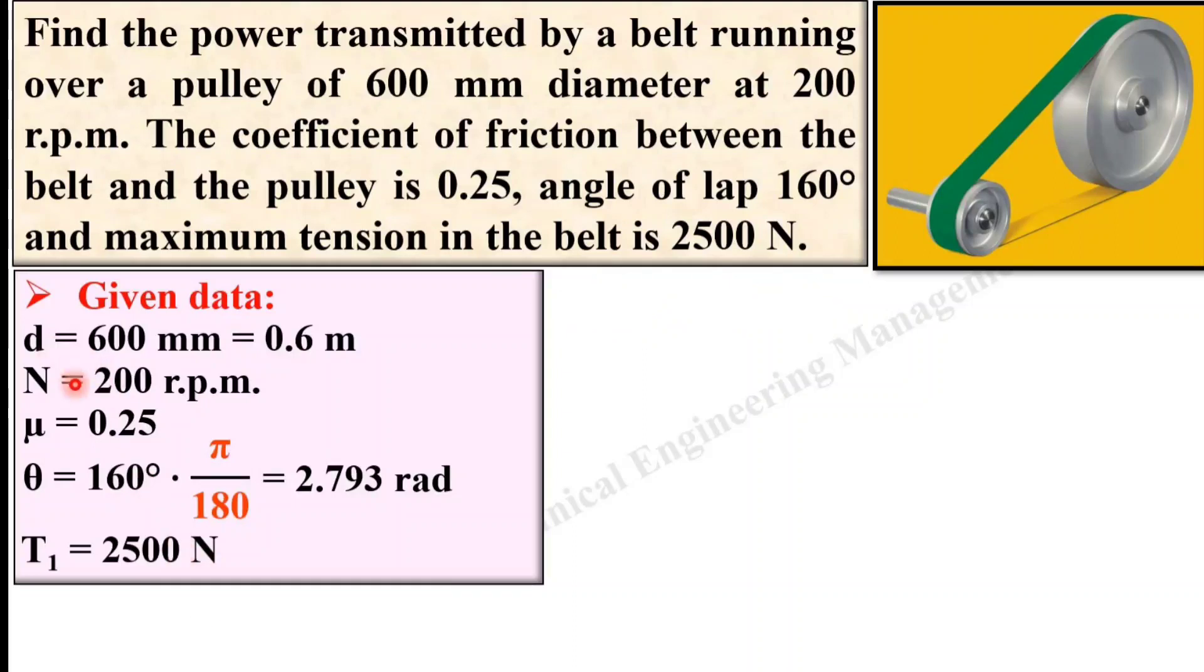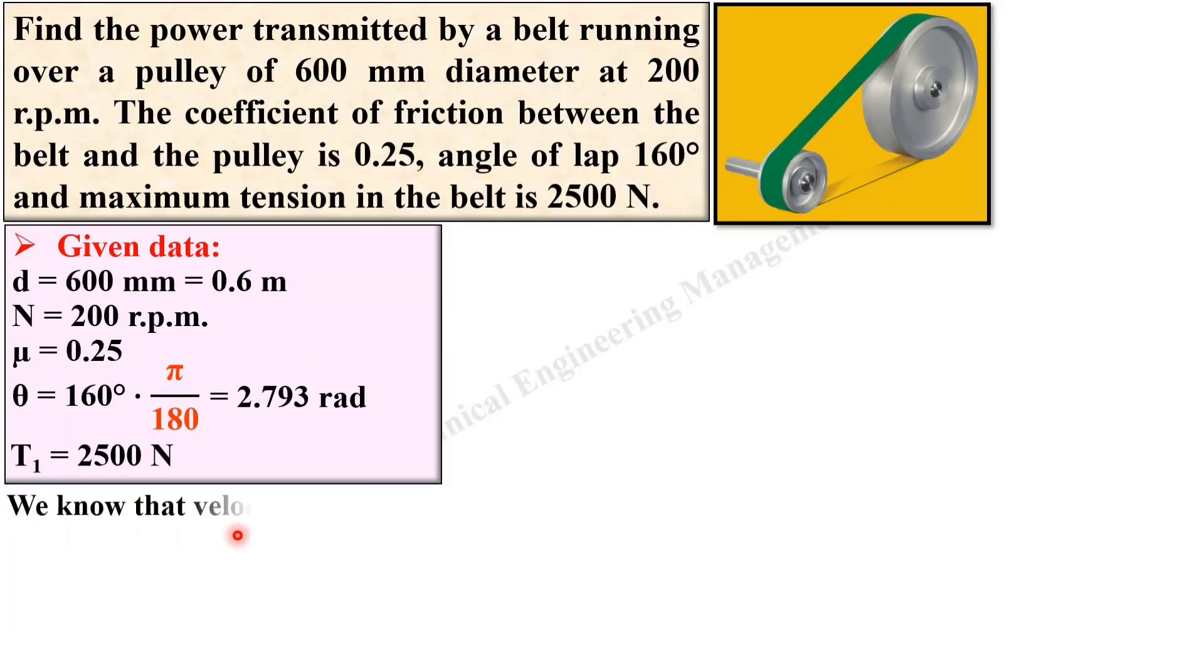Now here the diameter and rpm is given to you. So very simple, you can apply the formula for the velocity of the belt that is π·d·n/60. Keep in mind if the diameter and rpm is given to you then you should definitely apply this velocity equation. Now d and n is given to you, so put it over here so that you will get the velocity of the belt, v equals π·0.6·200/60 equals 6.283 m/s.